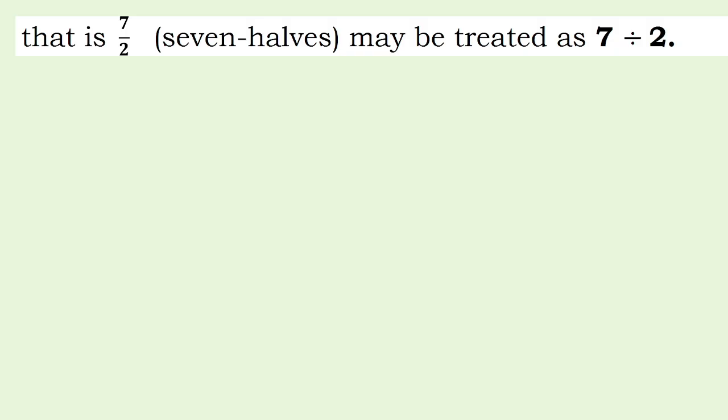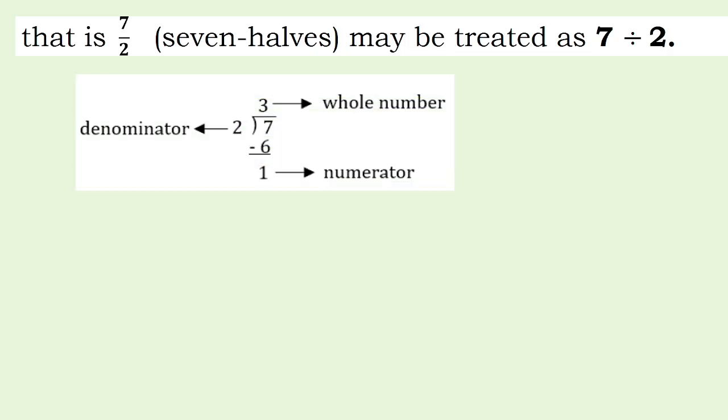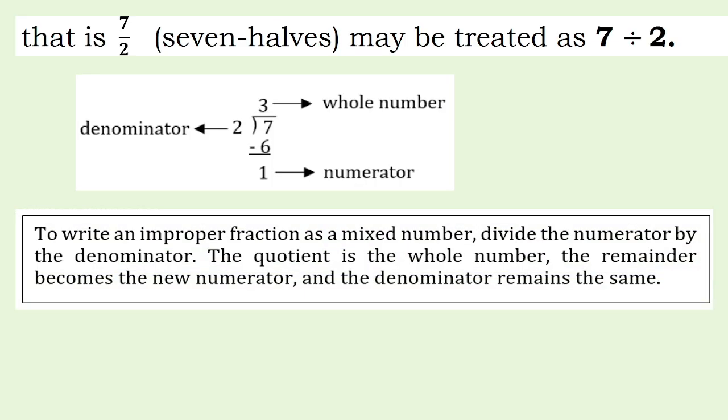Seven-halves may be treated as 7 divided by 2. To write an improper fraction as a mixed number, divide the numerator by the denominator. The quotient is the whole number, the remainder becomes the new numerator, and the denominator remains the same.